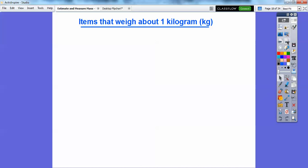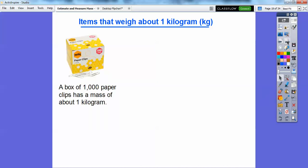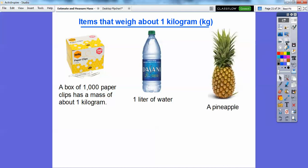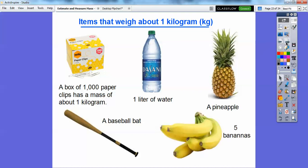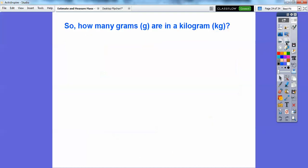So items that weigh a kilogram: the box of a thousand paper clips has the mass of about a kilogram. If that doesn't help, how about a liter of water? One liter of water also weighs about a kilogram. A pineapple probably weighs about a kilogram. A baseball bat weighs about a kilogram. Maybe five bananas also weigh about a kilogram.